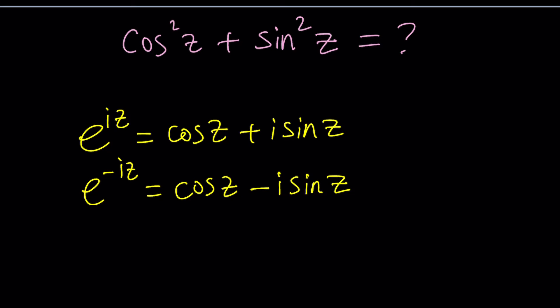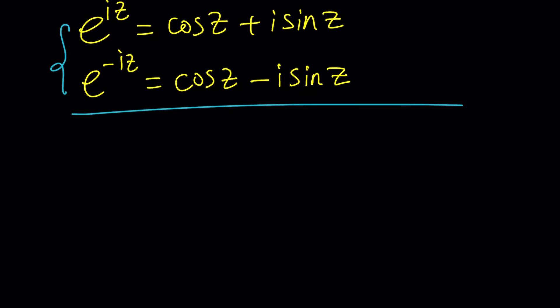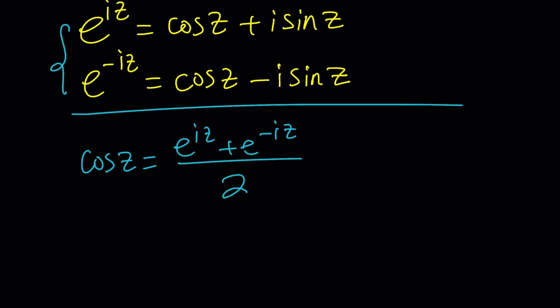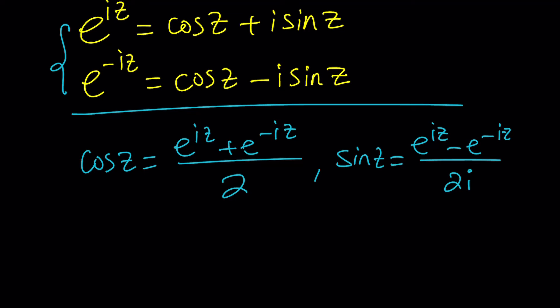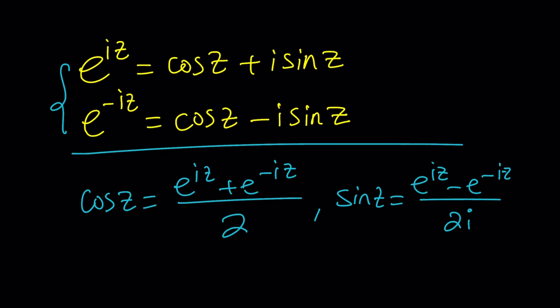We can go ahead and use these two equations — add them side by side and cancel the sine z — and we get two formulas. One of them is cosine z equals (e^(iz) + e^(−iz)) / 2. And the other one is sine z, which is (e^(iz) − e^(−iz)) / 2i — so it's divided by 2i instead of 2. If you ever forget them on a test, you can derive them by adding or subtracting the two equations.